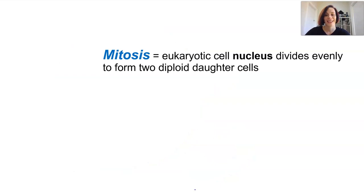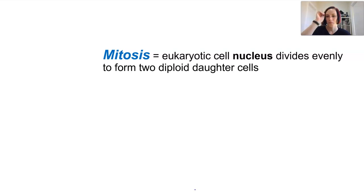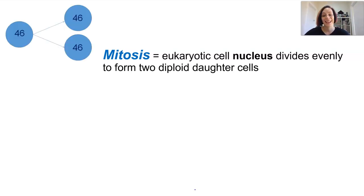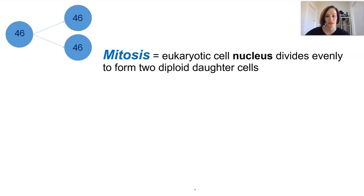Mitosis is the phase in the cell cycle where a eukaryotic cell nucleus divides evenly to form two diploid daughter cells. One parent cell replicates its DNA and divides to create two new identical cells. In humans we have 46 chromosomes, so all 46 need to go into each of the daughter cells.